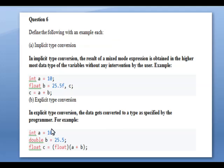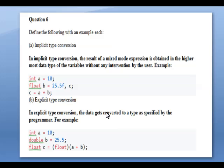Next question: define the following with an example. Implicit type conversion: implicit type conversion means the result of a mixed-mode expression is obtained in the highest data type of the variables without any intervention by the user. It is done by the compiler — write one example. Explicit type conversion: the resultant data type is converted by the user according to the user's choice — write one example.